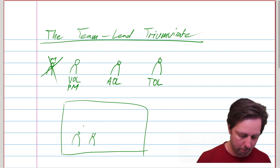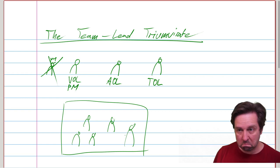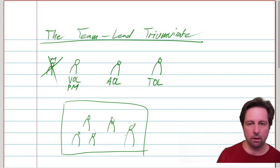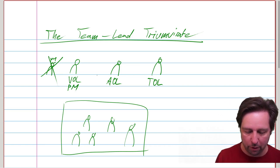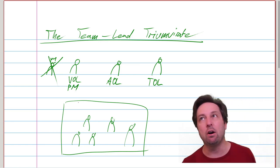There's a bunch of people working together here. And they take support, input, coaching from those three roles up here. So what does the value outcome lead do?